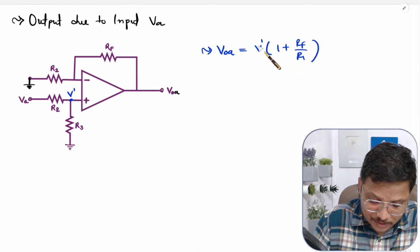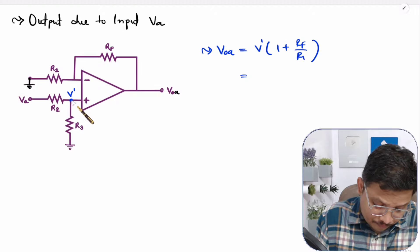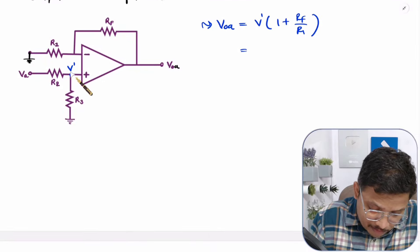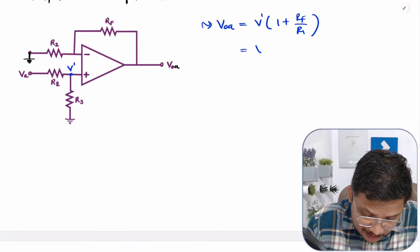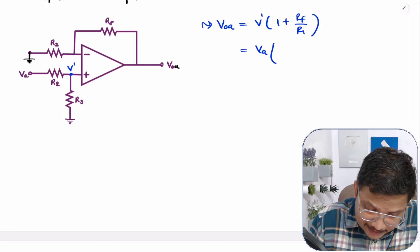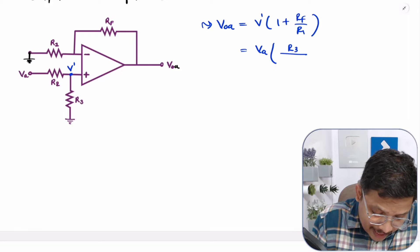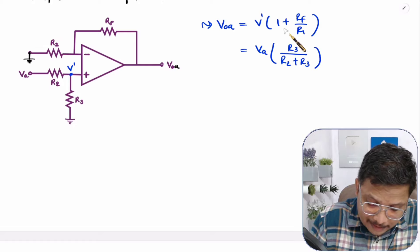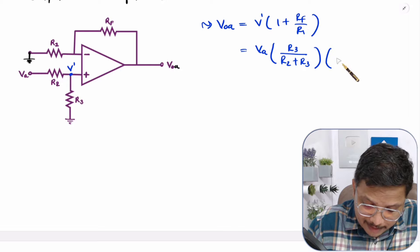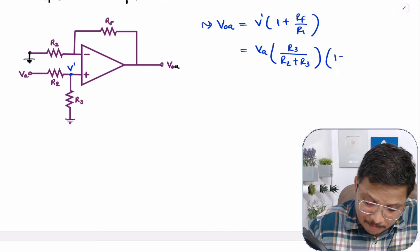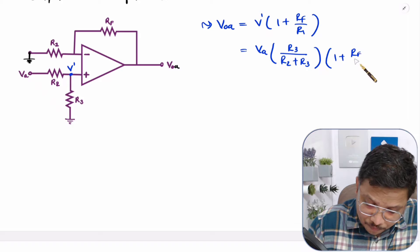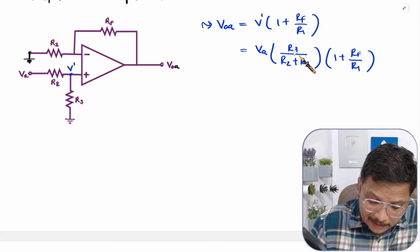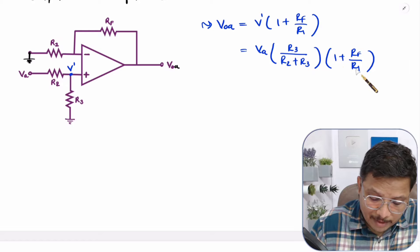Now, what is V dash? V dash can be calculated using the voltage divider rule. V dash equals Va multiplied by R3 divided by (R2 plus R3). Therefore, the output due to input Va is: Voa equals Va times R3 divided by (R2 plus R3), times (1 plus Rf over R1).